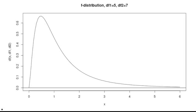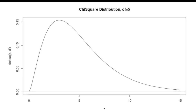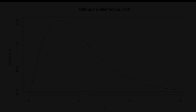We used an F distribution to do a hypothesis test for the equivalence of variances. F distributions need two degrees of freedom — the first degree of freedom in this one is 5 and the second is 7. A chi-squared distribution was used to study goodness of fit and homogeneity; here's a chi-squared distribution with a degree of freedom of 5.